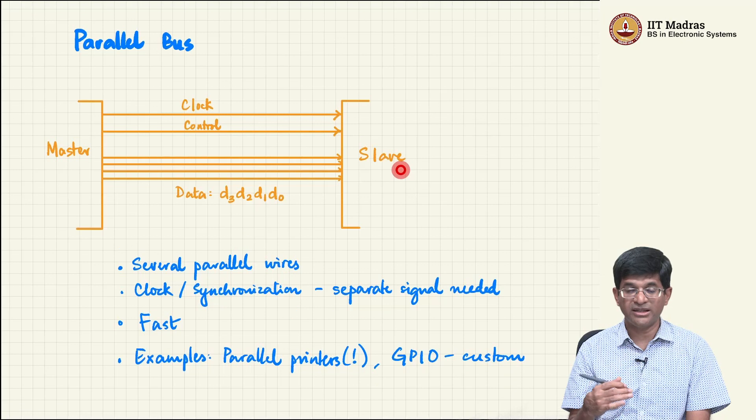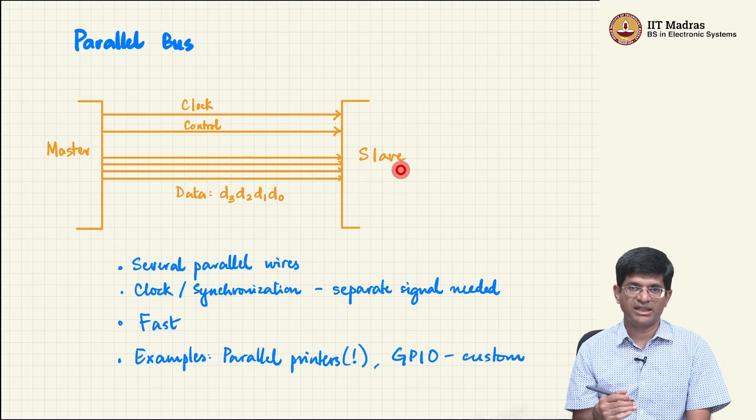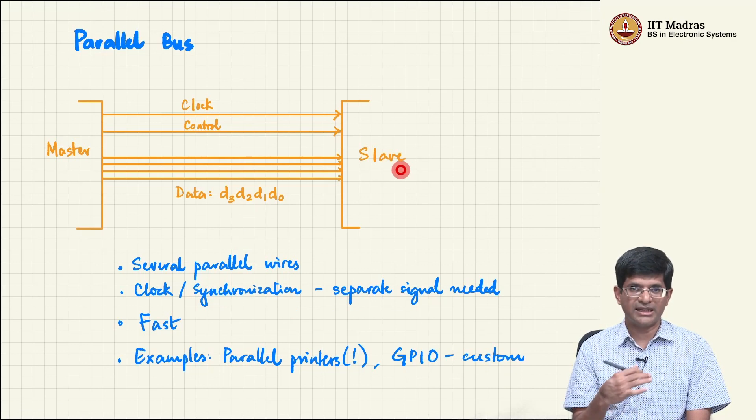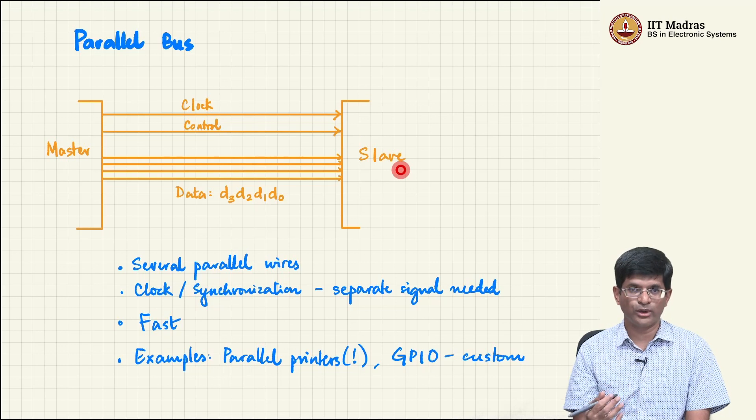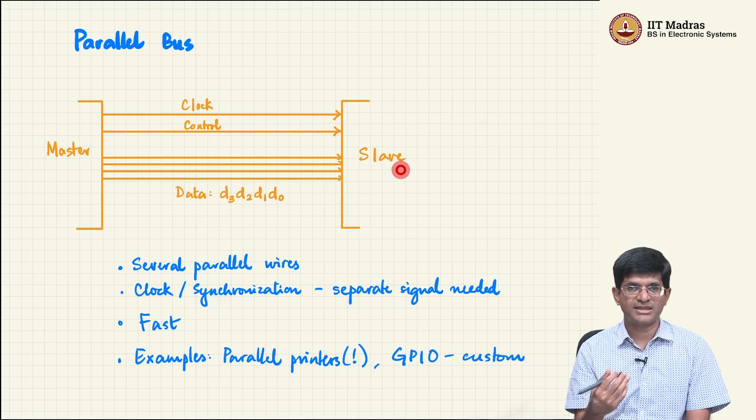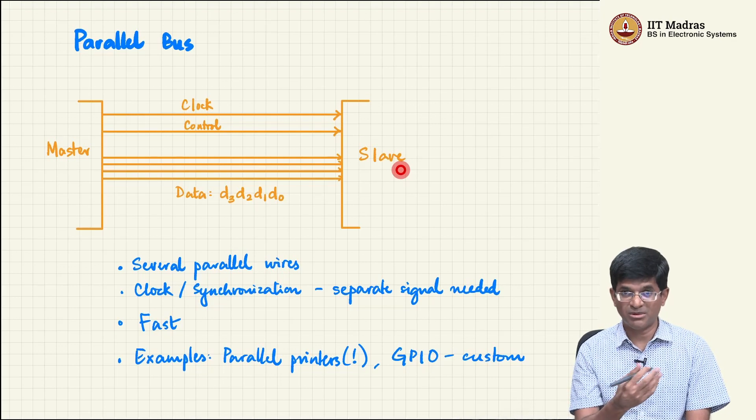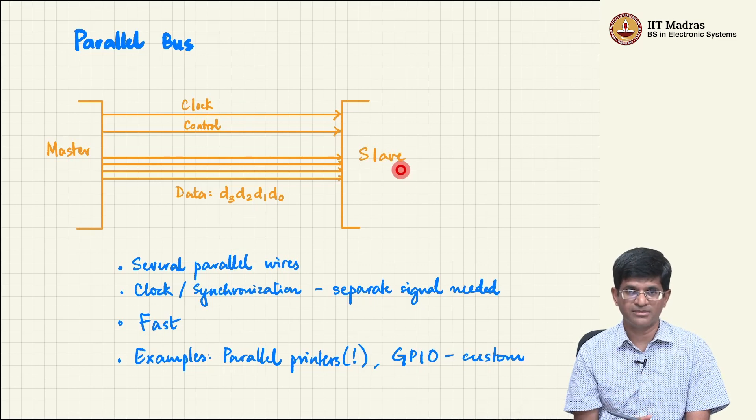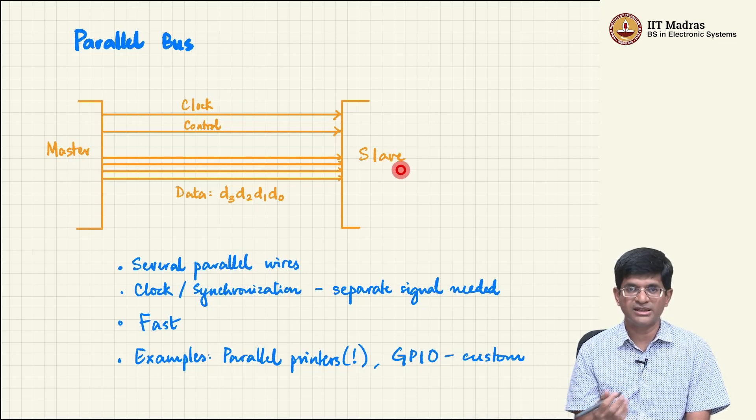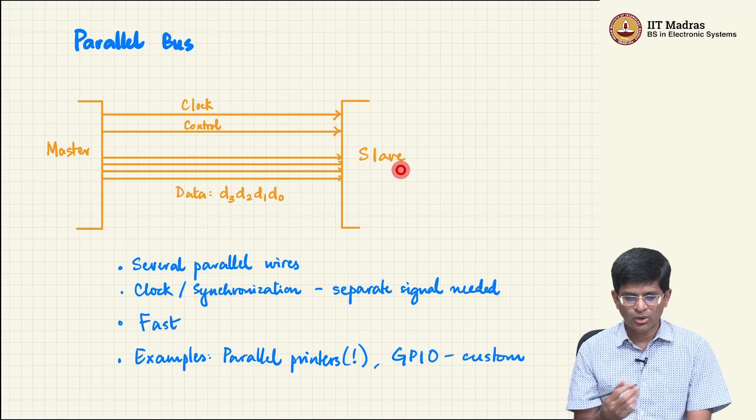The only thing that you need to remember is when some device is called a master, it means it is capable of initiating a transaction or a transfer of communication of data. Whereas the slave devices are mostly passive to start with, meaning that if they are just connected and there is no communication with them, they are not going to respond until some master initiates a transaction with this particular slave device.